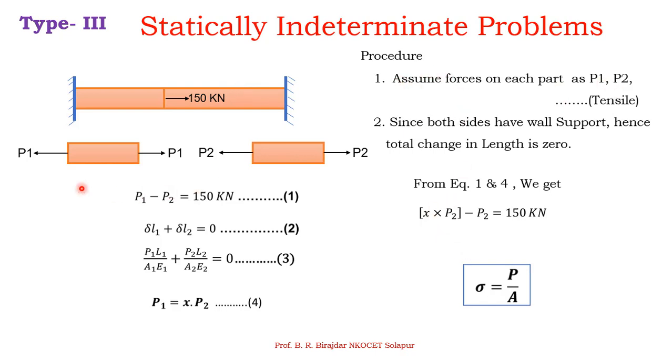Now, I assumed that the forces acting on body one and two are tensile in nature. At the end, if I get P1 and P2 positive, then the assumed directions are correct—the forces are tensile. If I get P1 or P2 negative, that indicates the force is compressive in nature. Initially we assume tensile, but if we calculate and get negative, then we consider it as compressive. In this way we can calculate the forces and stresses for Type-3 problems.